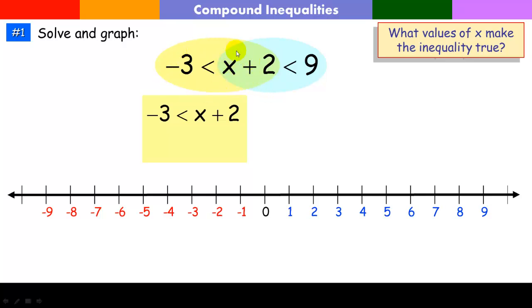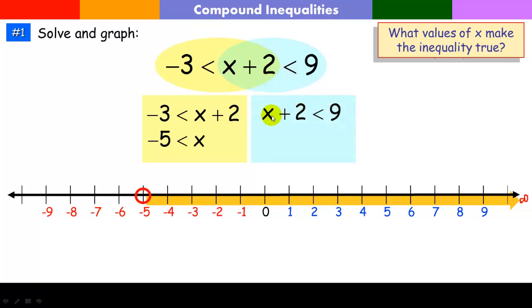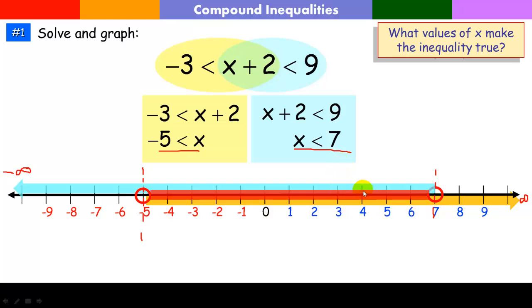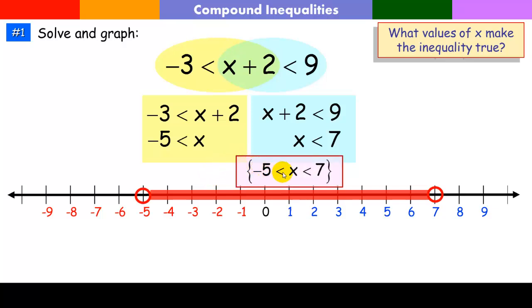I'll deal with the first inequality: subtract two, and I have x is greater than negative five — there's my boundary point with the solution going off to infinity. For the second, subtract two from both sides and I have x is less than seven, with an arrow going off into negative infinity. The solution set for the entire compound inequality must fall between these boundary points, satisfying both conditions. Therefore, my solution set is between the boundaries: all numbers greater than negative five and less than seven.